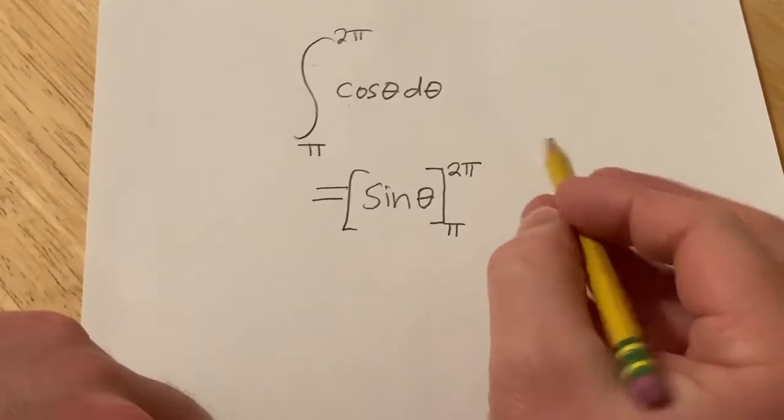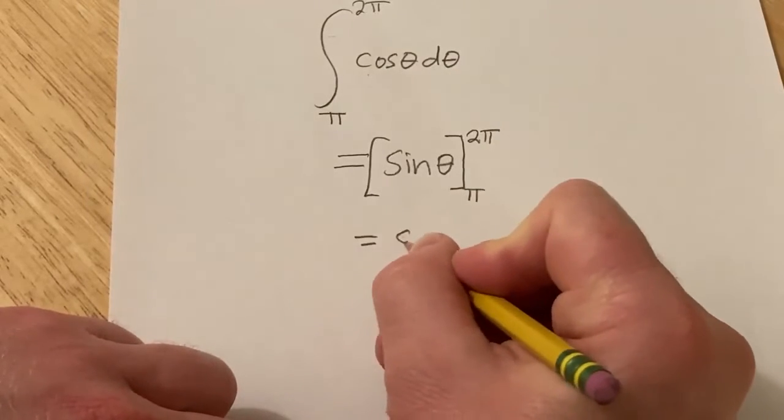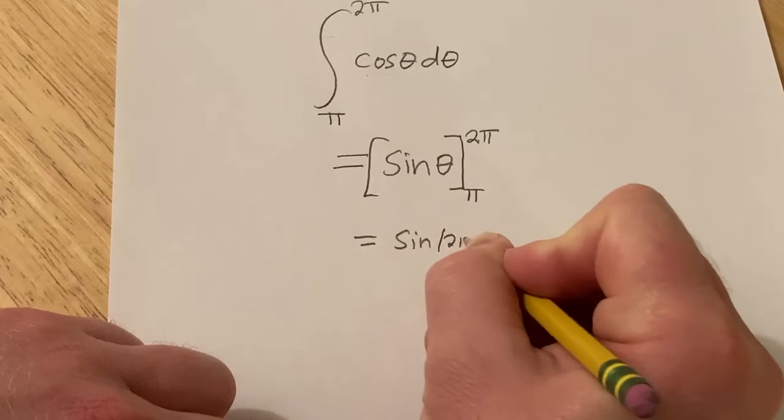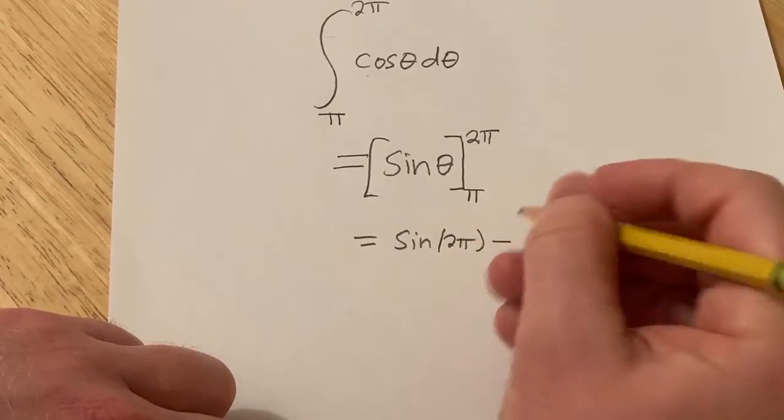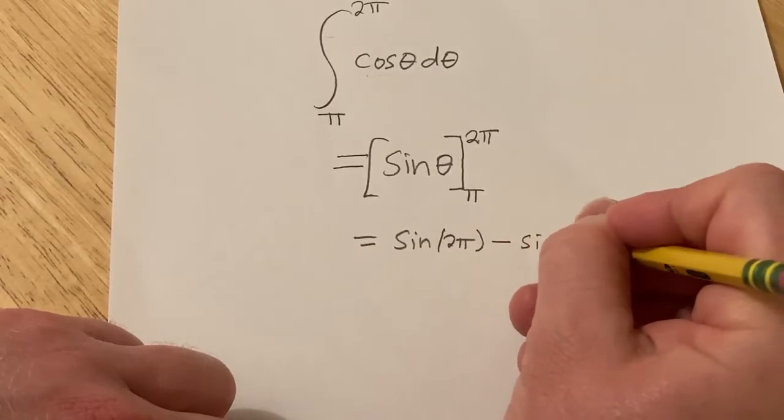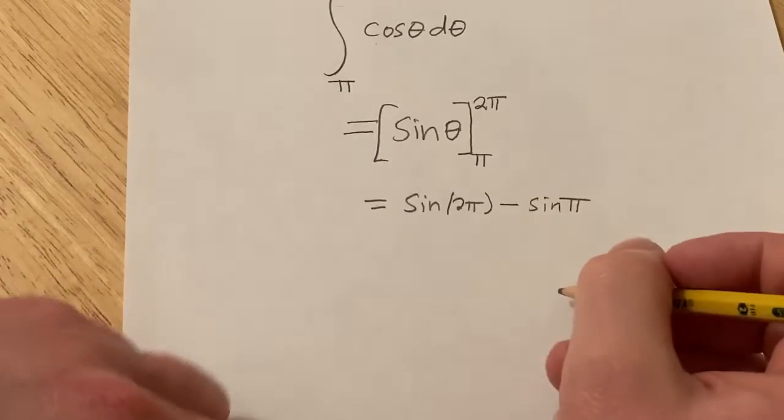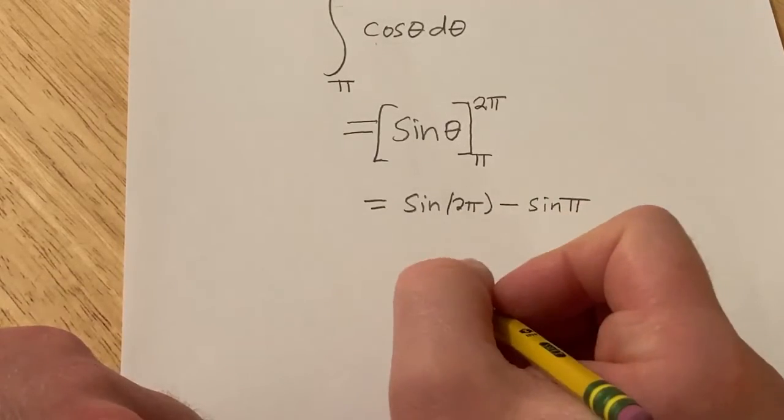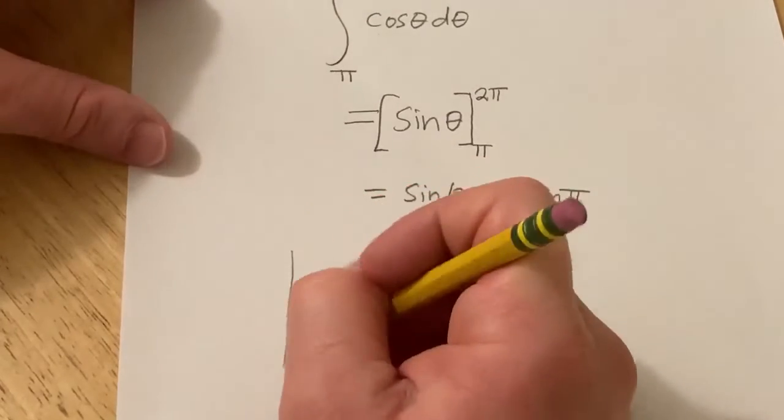And the formula says that you plug in the top number first. So this is equal to sine of 2pi then you subtract and then it's the sine of pi. Really nice. And sine of 2pi, well let's think about what that is. So on the unit circle...